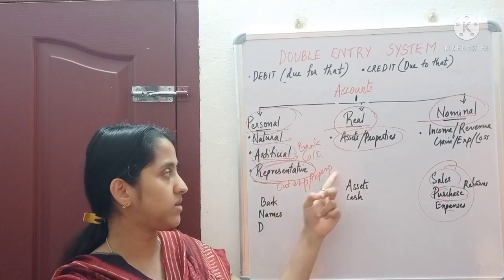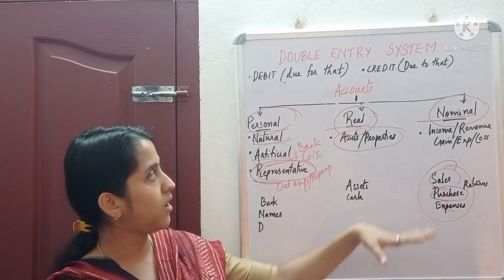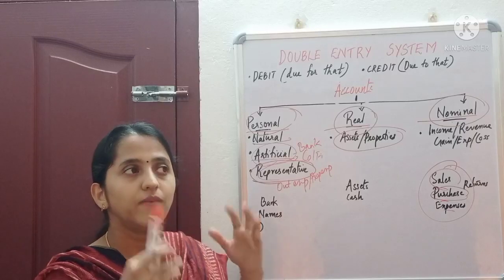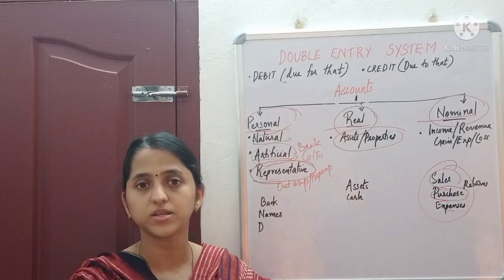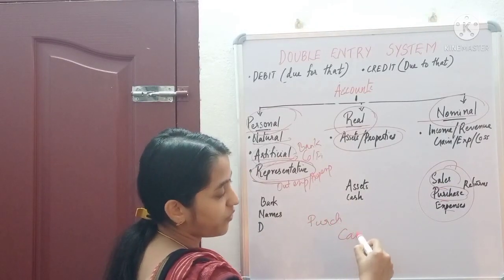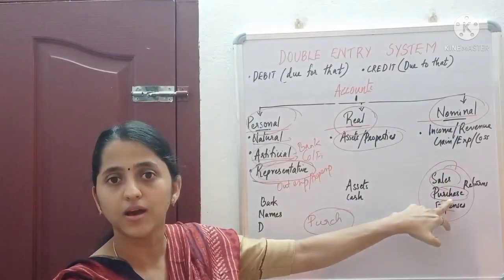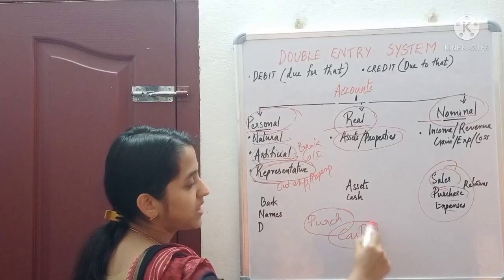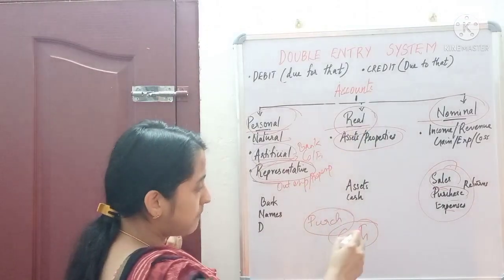Examples of personal account include natural persons like Ravi's account or Manu's account, artificial persons like a bank's account or a company's account, and representative personal accounts like outstanding expenses or prepaid expenses. In our purchase example, purchase comes under nominal account because it is an expense, and cash is a real account because cash is an asset of the company.